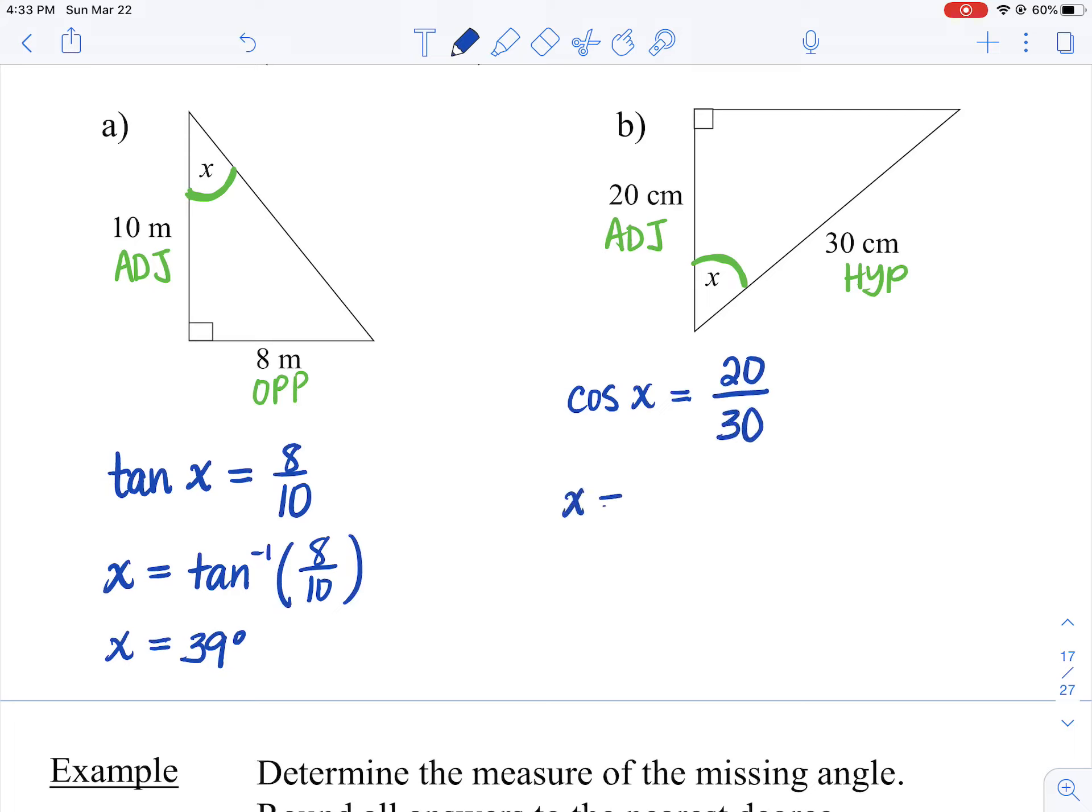So X is equal to cos inverse of 20 over 30. Okay, into the calculator that goes. Get 48 degrees.